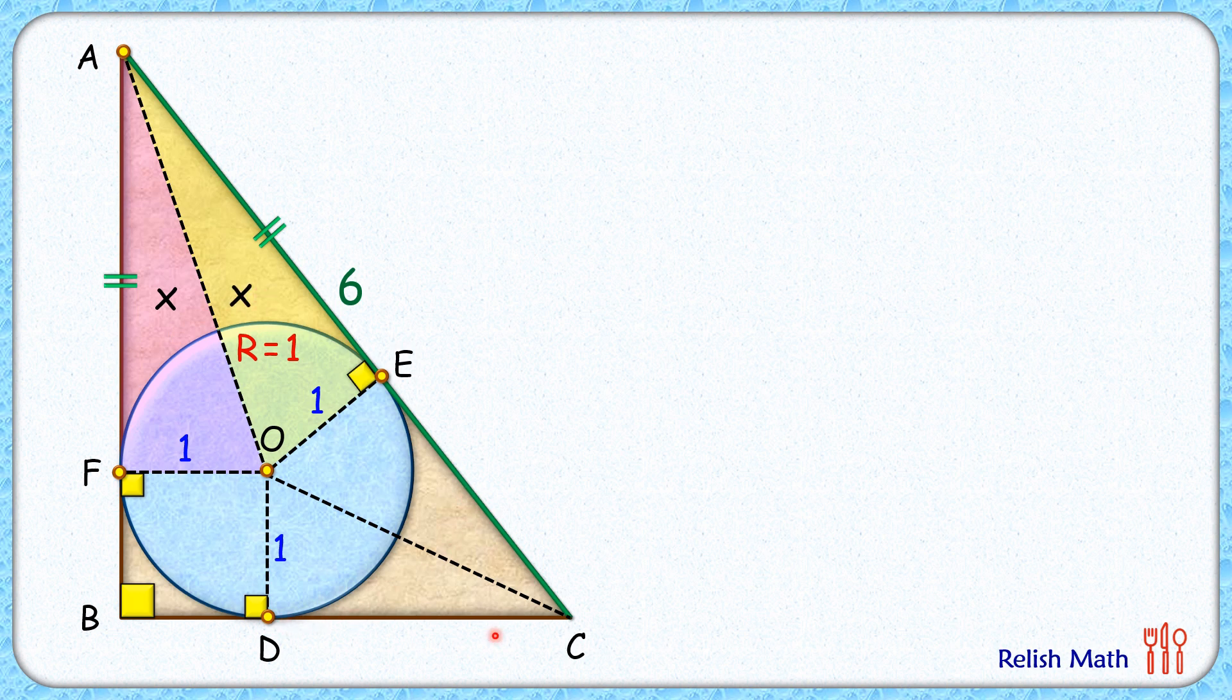Same way here, if we look at triangles CDO and CEO, from external point C two tangents are drawn CD and CE. They will be equal, and DO and EO are the radius which are equal. CO is common, so these two triangles are congruent by side-side-side theorem. Thus if this area is y cm², then this red area will also be y cm². And then the third part of this triangle is OFBD. OFBD has all angles of 90 degrees and adjacent sides are equal, so it's a square.